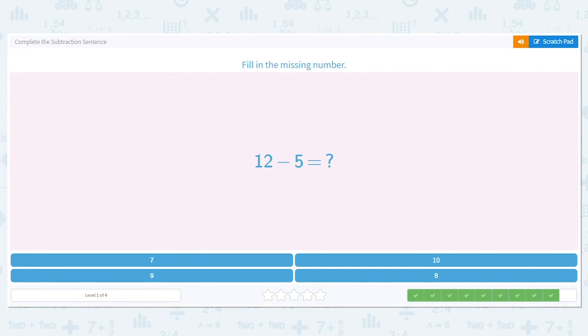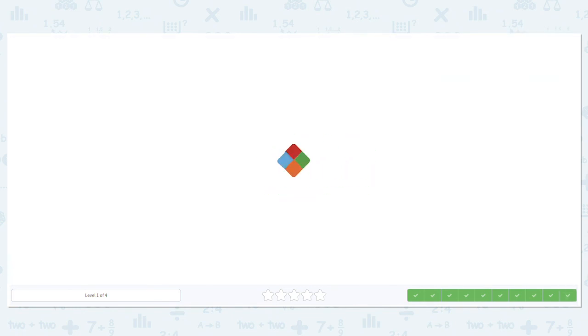Last one. 12 minus 5 equals what? This one we just have to straight up subtract. So if I can't just know it, I can count up from 5 until I get to 12. So I start at 5, and then 6, 7, 8, 9, 10, 11, 12. That gives us 7. So 12 minus 5 equals 7. Great job today.